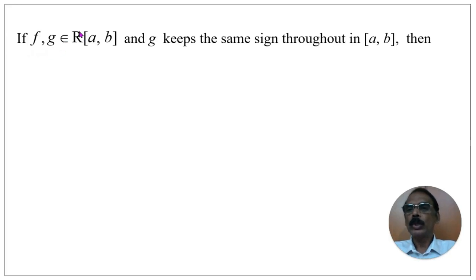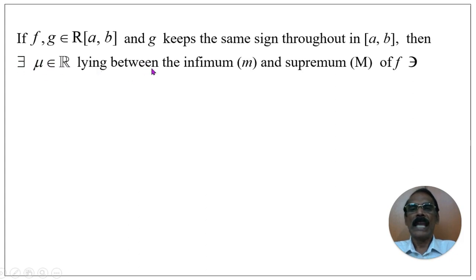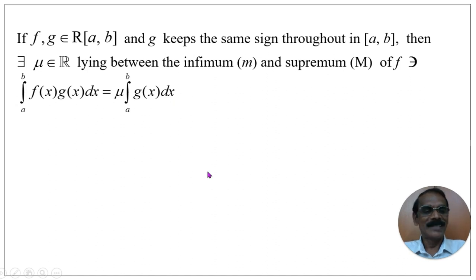If f and g belong to R of the closed interval [a, b] — that is, the functions f and g are Riemann integrable over the closed interval [a, b] — and the function g keeps the same sign throughout the closed interval [a, b], then there exists a real number μ lying between the infimum and supremum of f, namely m and M, such that the integral from a to b of f(x)g(x) dx equals μ times the integral from a to b of g(x) dx. This statement is known as the First Mean Value Theorem.